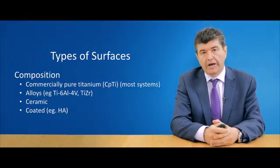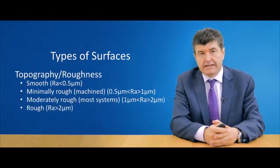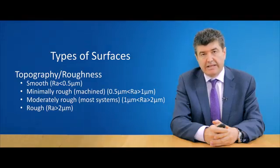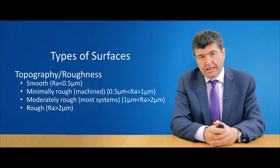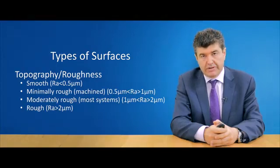A very common way of classifying implants, however, is according to their surface topography or roughness. This takes into account the arithmetic average of the roughness profile. Very smooth surfaces with an arithmetic average less than 0.5 micrometers are surfaces which are electropolished, for example, and these do not support osseointegration.